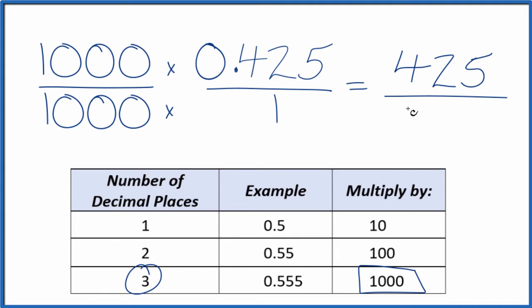1,000 times 1, that is 1,000. And now we have our fraction, 425 over 1,000. That's equal to the decimal 0.425. But we can reduce this to simplest terms, because I know 5 would go into 425 and 1,000. And 25 also goes into 425 and 1,000.